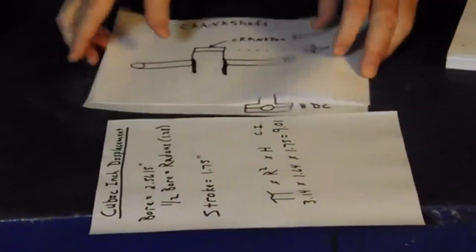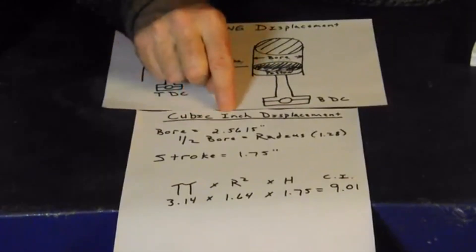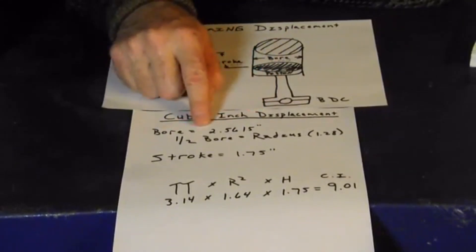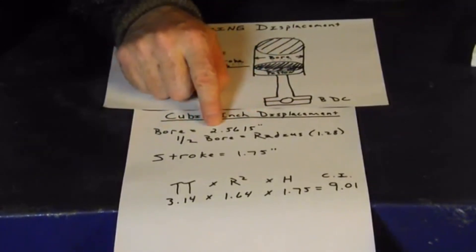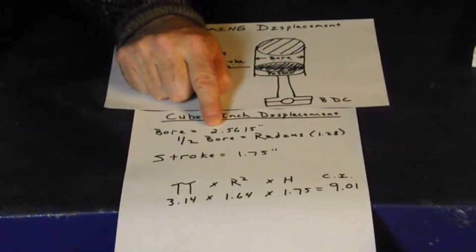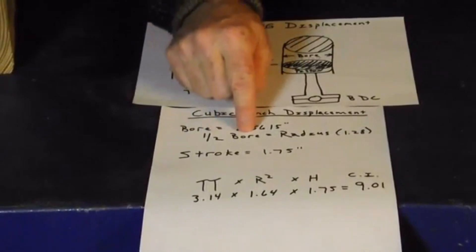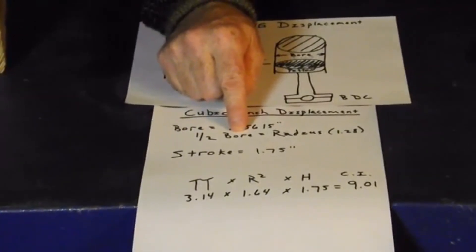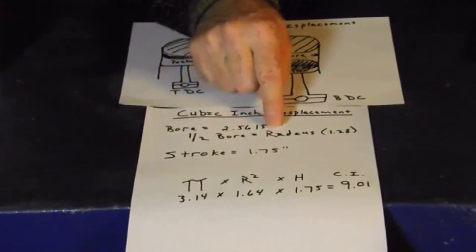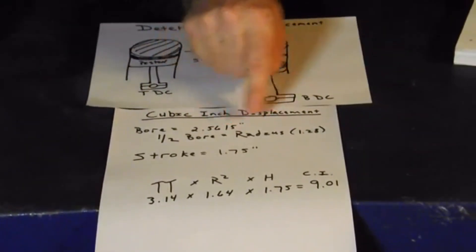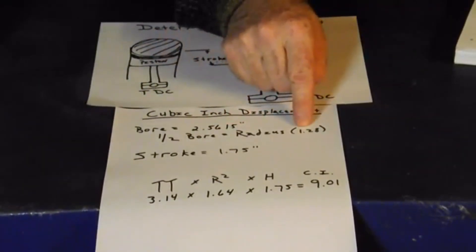Now let's do the math. To figure cubic inch displacement, you take your bore, which again is the diameter of your cylinder. And in our book it says it's 2.5615 inches. And half the bore, or half the diameter, would be our radius. So you take the 2.5615 and you divide it by 2 and you're going to end up with 1.28.